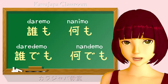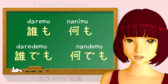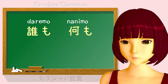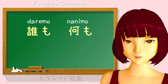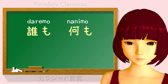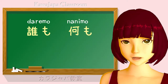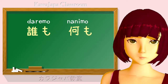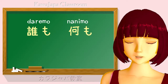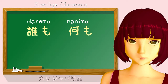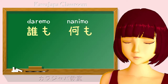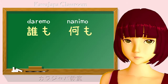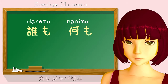Let's start with daremo and nanimo. We combine these with a negative, like nai, to mean nobody or nothing. So daremo inai means there's nobody there, and nani mo nai means there's nothing.